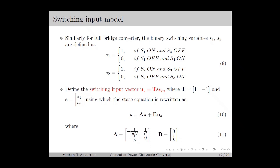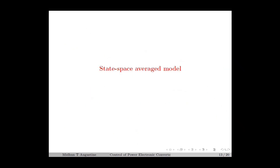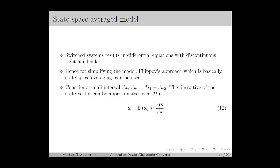Note that the switching input model is equivalent to the switcher system model and can only be used when the system matrices are the same for all subsystems. Next, we move to the state-space averaged model. The switcher system model is time-varying in nature and results in a state equation with a discontinuous right-hand side. To simplify the model, we use Filippov's approach, which is basically state-space averaging. In state-space averaging, we approximate the switcher system model with an average state equation. For a general switcher system x-dot equals f_sigma(x) with two subsystems, sigma equals 1 gives x-dot equals f1 and sigma equals 2 gives x-dot equals f2.